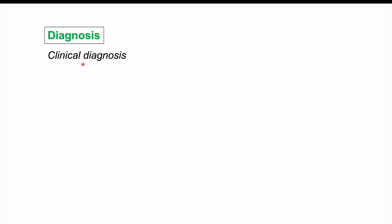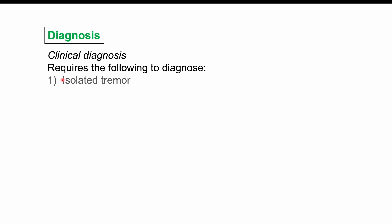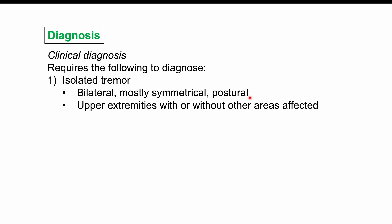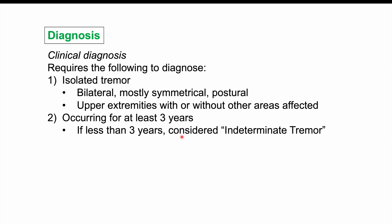Essential tremor diagnosis is a clinical diagnosis based on history and physical examination; a family history makes the diagnosis easier. The diagnosis requires an isolated tremor, especially bilateral, mostly symmetrical and postural, affecting the upper extremities with or without other areas, and that the tremor has occurred for at least three years. If the tremor has occurred for less than three years, it is considered an indeterminate tremor and monitored until the three-year threshold is met.